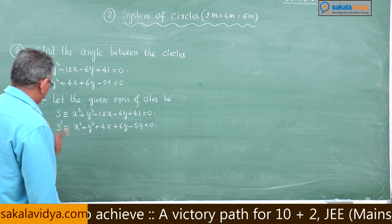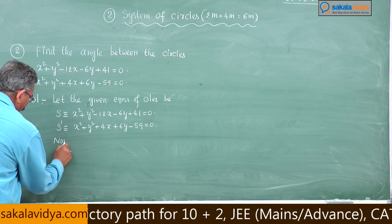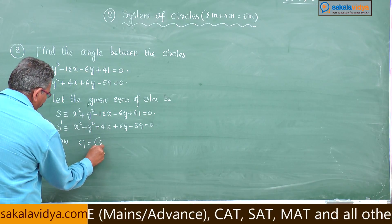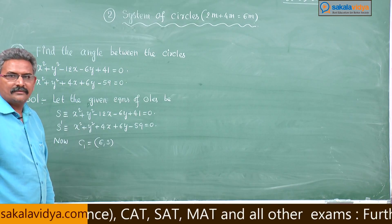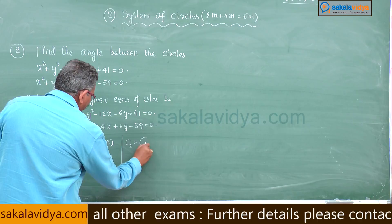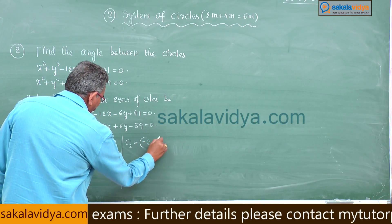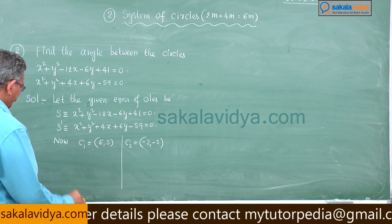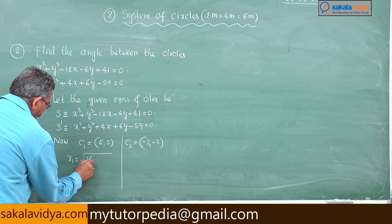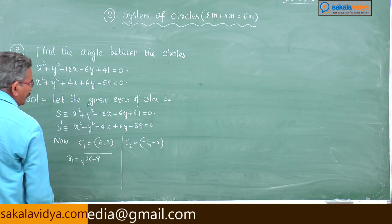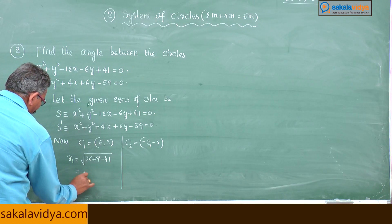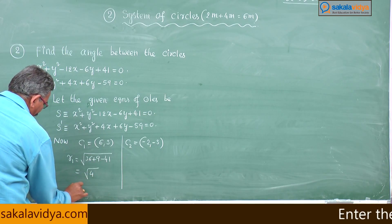Now, C1, the center of the first circle, is (6, 3). C2, the center of the second circle, is (−2, −3). The radius r1 equals the square root of 36 plus 9 minus 41, which is the square root of 45 minus 41, equals 2.